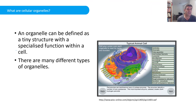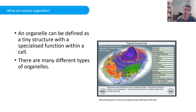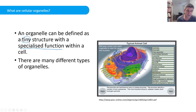We've had a look at a few of these different types of structures before. The key thing is to firstly define what an organelle is. Any tiny structure in a cell with a specialised function is pretty much an organelle.